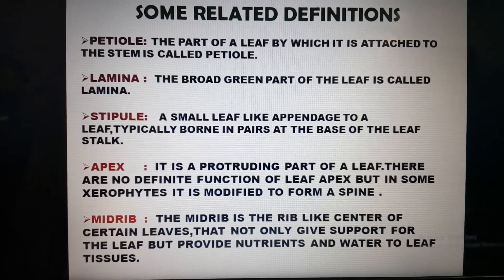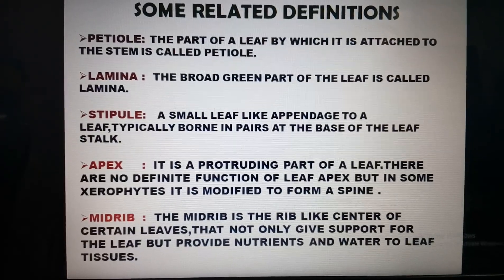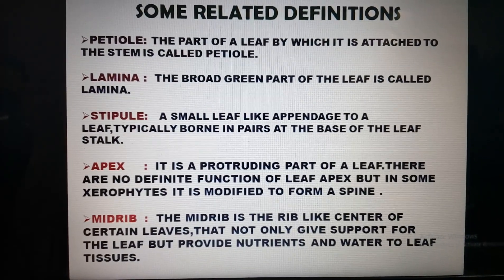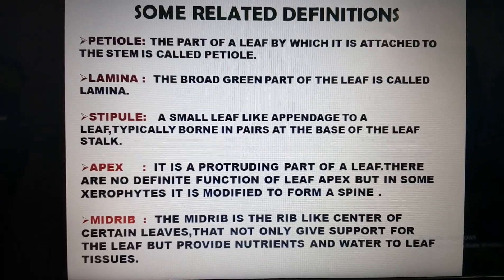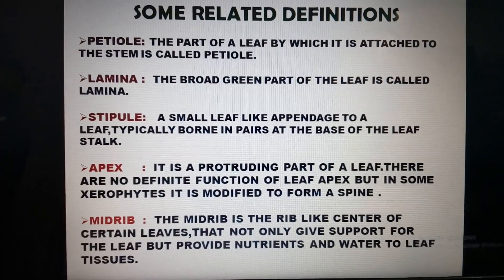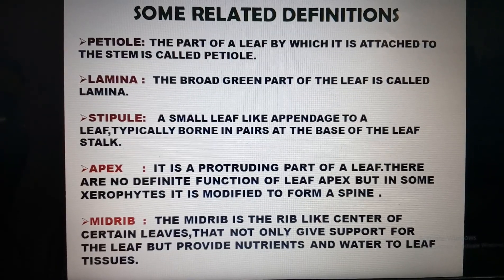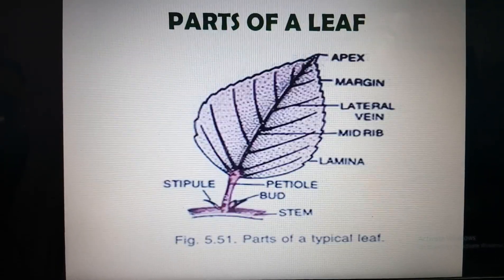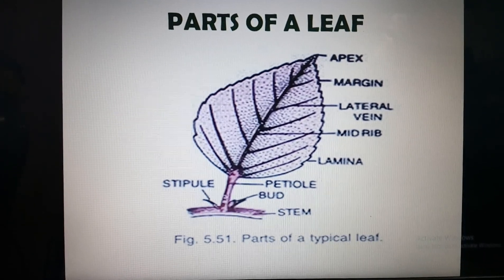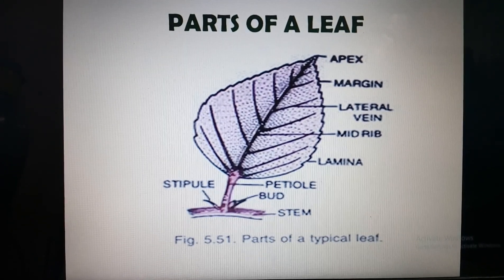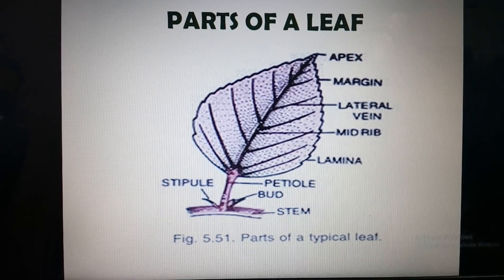This one is the midrib. The midrib is the rib-like center of certain leaves that not only gives support to the leaf but also provides nutrients and water to the leaf. In the diagram you can see the central portion, which is called the midrib.